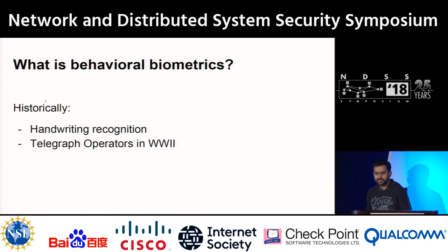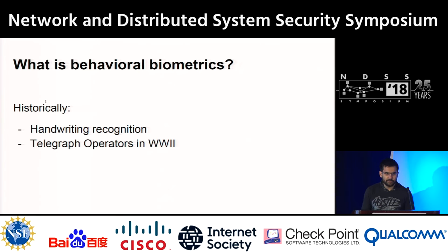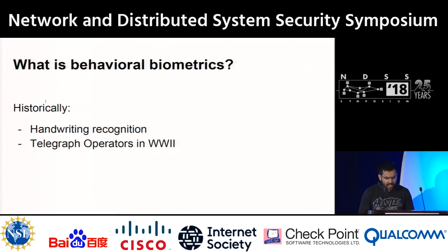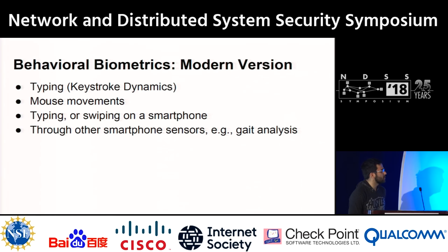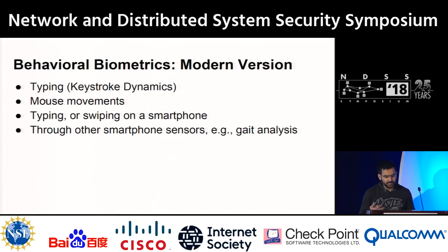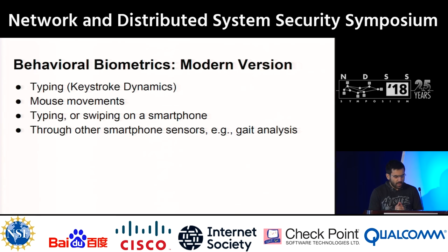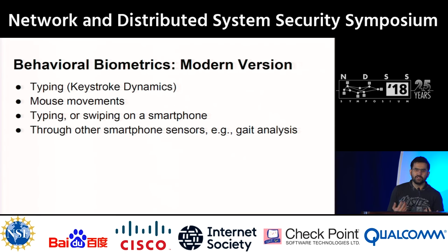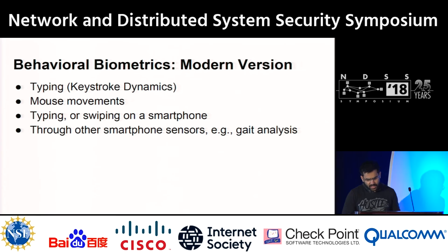The idea of using unique characteristics of human behavior to identify or recognize people is an old one — handwriting recognition has been around forever. But in modern settings we interact with so many devices that there's a lot more potential for applying such systems. For instance, keystroke dynamics is becoming a huge field, and you can do similar things with mouse movements or swiping on smartphones.